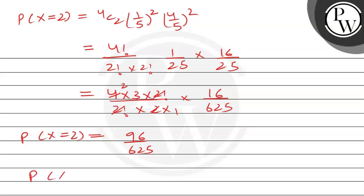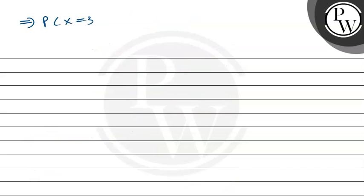P(X=3) = 4C3 × (1/5)^3 × (4/5)^1 = (4!/1!×3!) × (1/125) × (4/5) = 4 × 4/625 = 16/625.